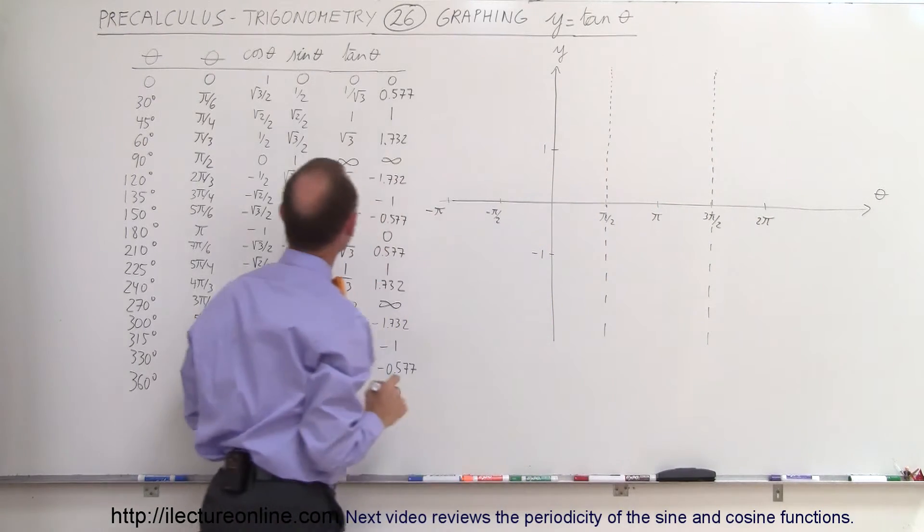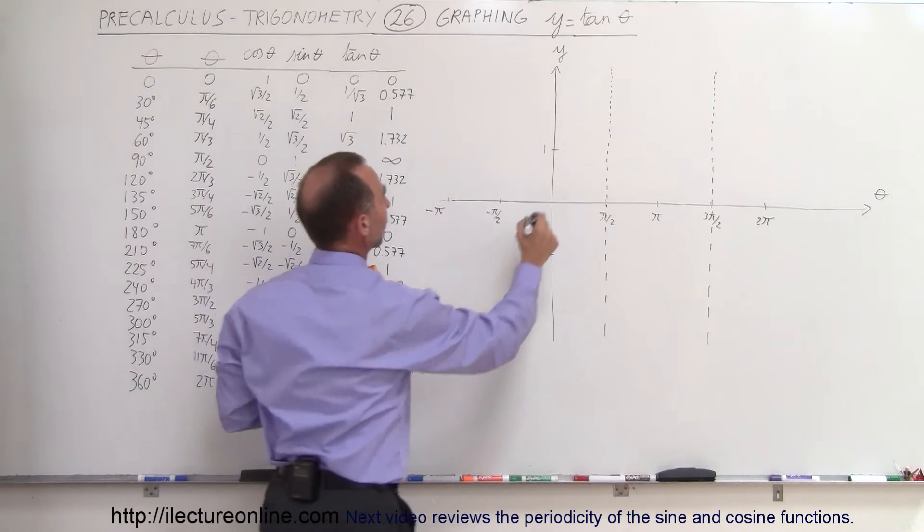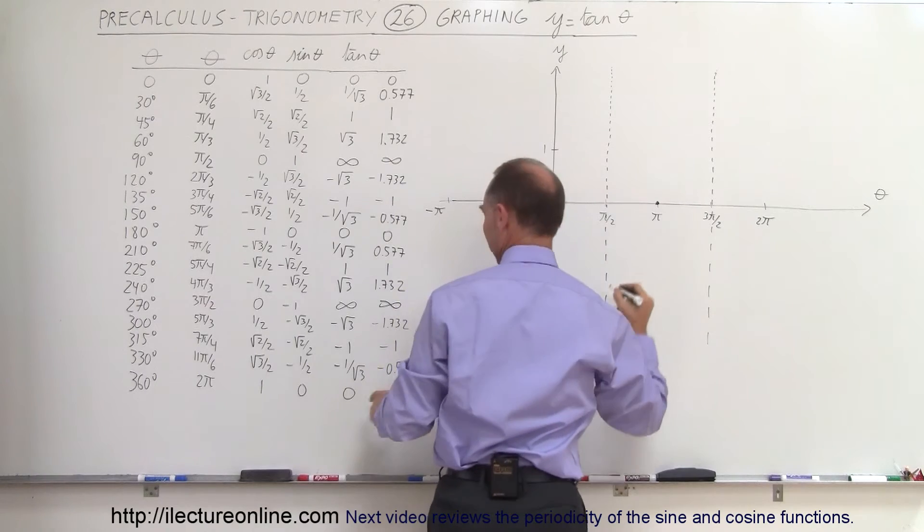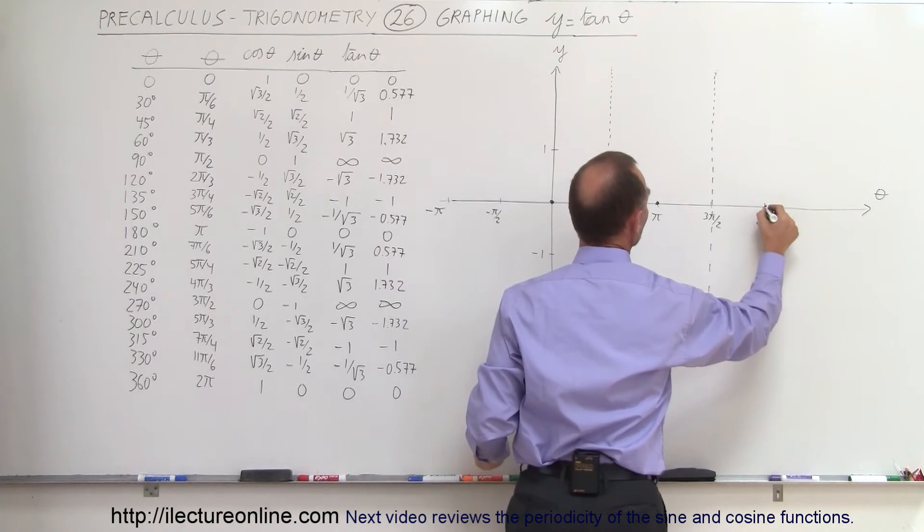Now to get some of the other values we have 0 at 0. We have 0 at 180 degrees. And we have 0 again at 2 pi. So there the value is 0.